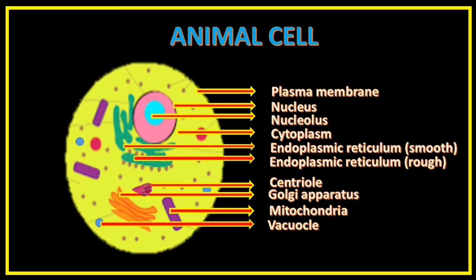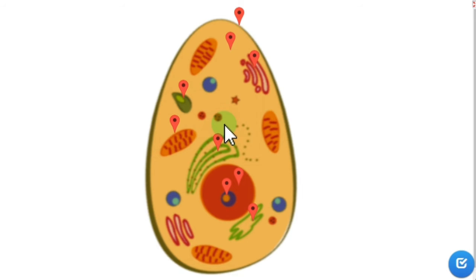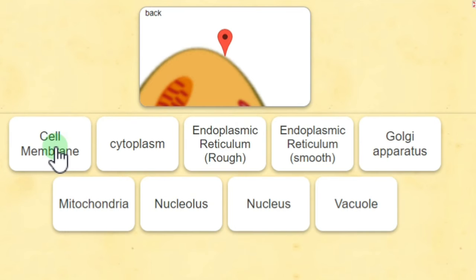Hi children, in our last class we discussed components of the animal cell and their functions. In today's class we are going to do an assessment. Children, just click the marker and select the correct part of the animal cell from the given choices.